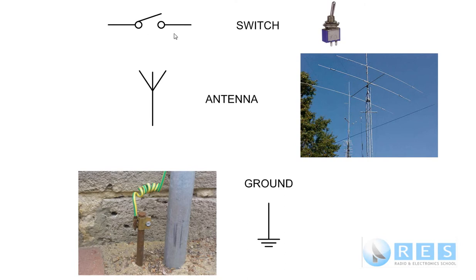Now we have the switch — that was the switch we saw in the schematic diagram earlier, turning a lamp on and off. We use an on-off switch. When the switch is closed, the two contacts close; when the switch is open, the two contacts open. That's the simple on-off switch symbol — you need to remember it.